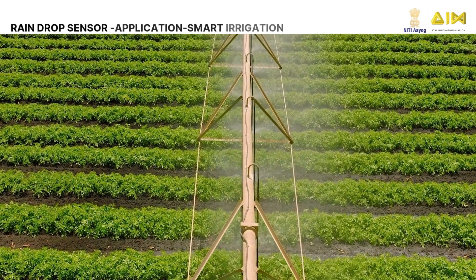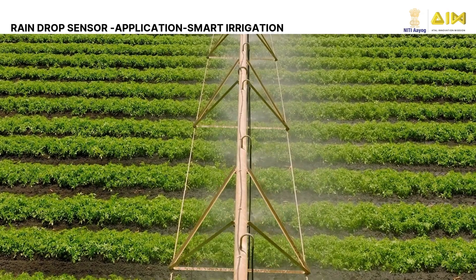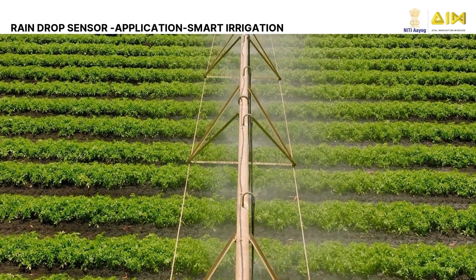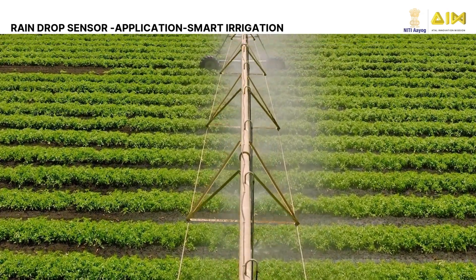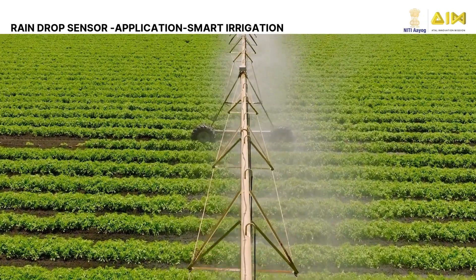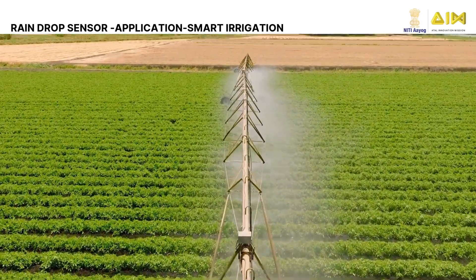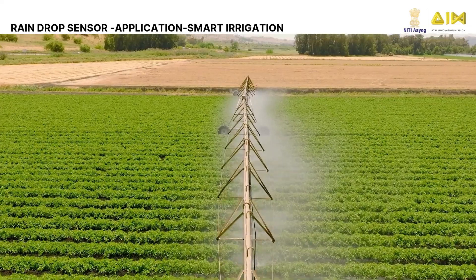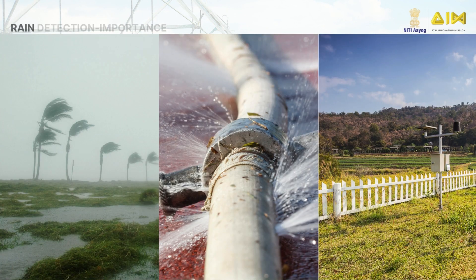Let us understand why this sensor is important. Imagine a smart farm where irrigation stops automatically when it rains. Wow, wonderful, isn't it? Well, that is just one of many uses it has. It is widely used in weather monitoring, agriculture and automation projects.